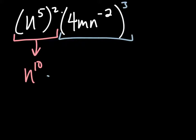So we're going to multiply by 4 cubed times m cubed times n to the... Well, what happens when we have exponent to an exponent? We're multiplying them together. So this is n to the negative 6.